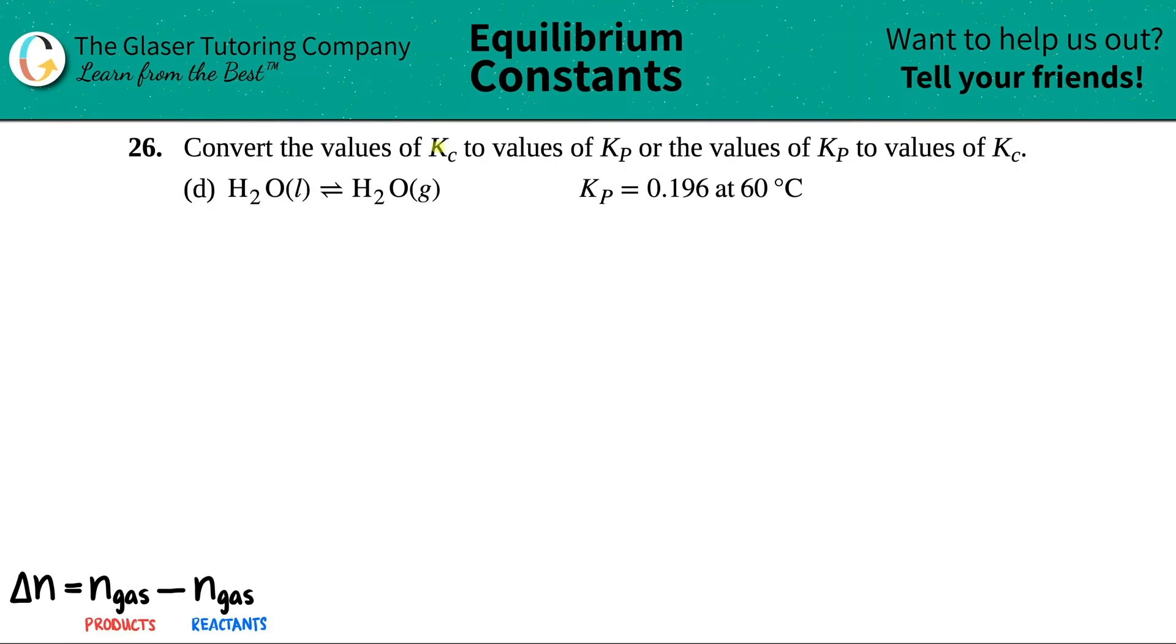Number 26. Convert the values of Kc to values of Kp, or the values of Kp to values of Kc. And then we have letter D out of this bunch of number 26. So the first thing I'm going to do is just rewrite the balanced equation a little bit bigger. So we have H2O liquid, and this comes to equilibrium with H2O gas.